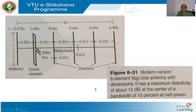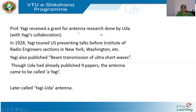A modern six-element Yagi-Uda antenna has one driven element, one reflector, and four directors on a metal boom. The reflector is spaced lambda/4 from the driven element and directors are spaced 0.31 lambda apart, with a total length of 1.5 lambda. This configuration gives a maximum directivity of 12 dBi and a bandwidth of 10 percent half-power.